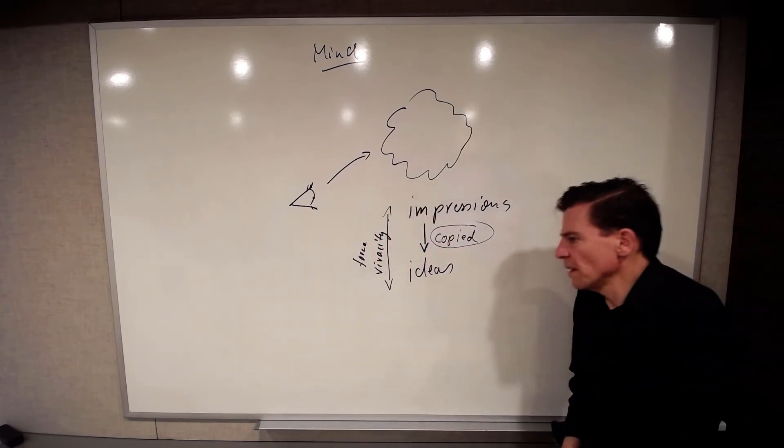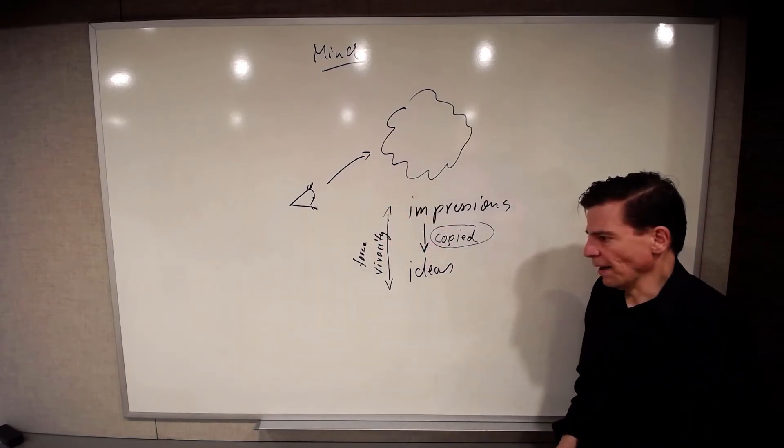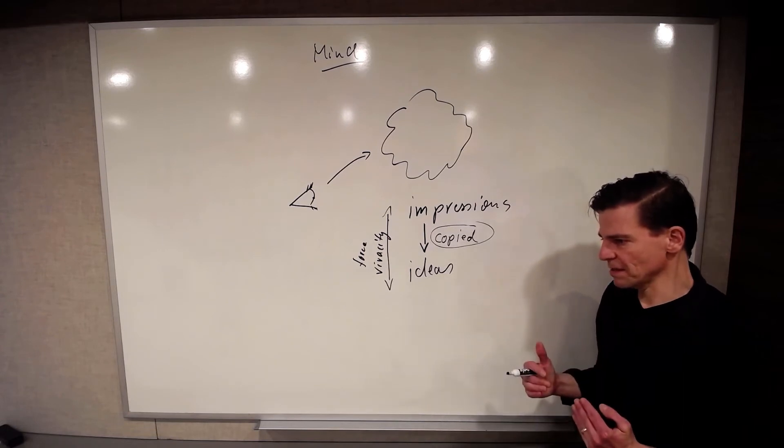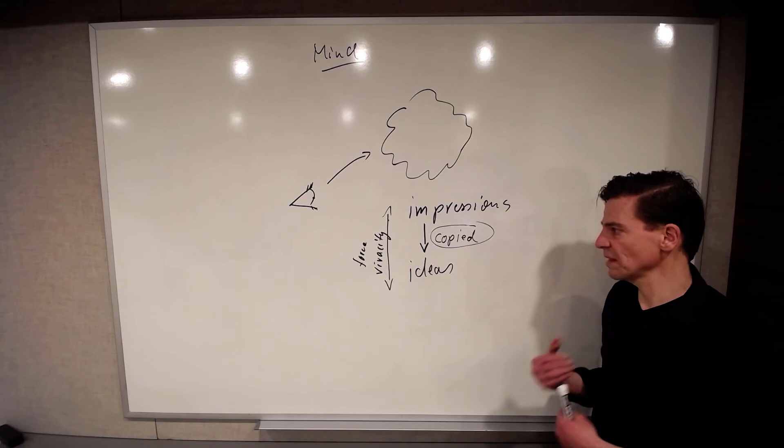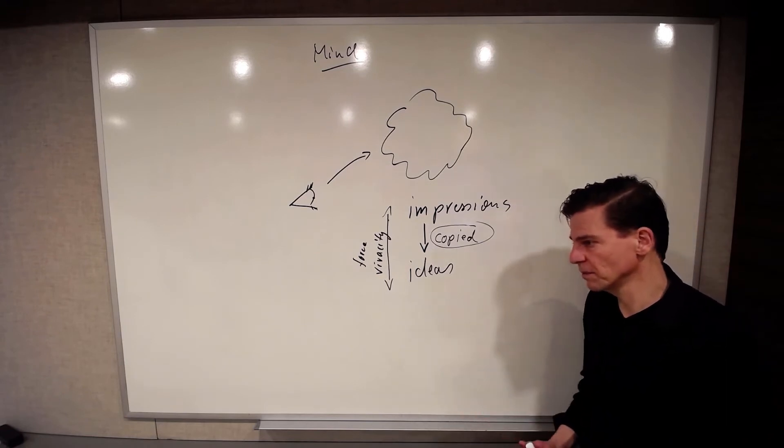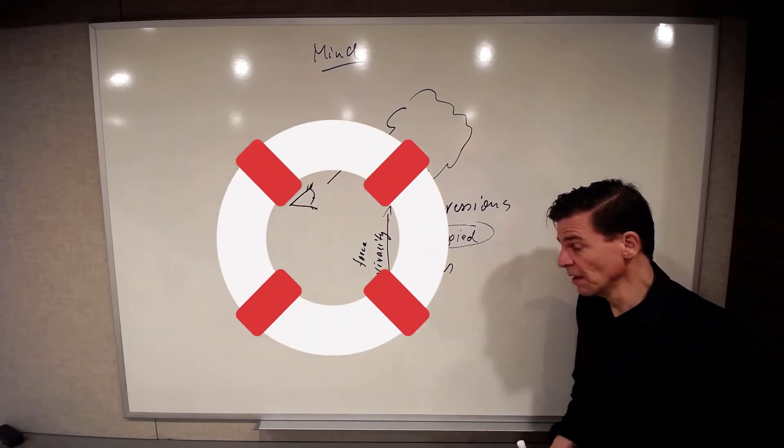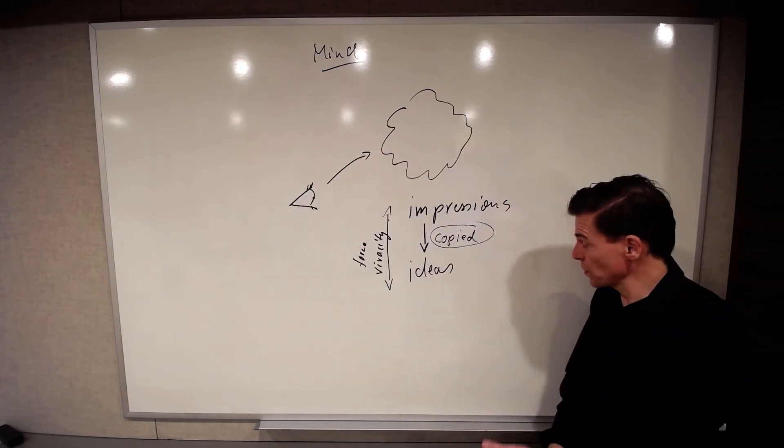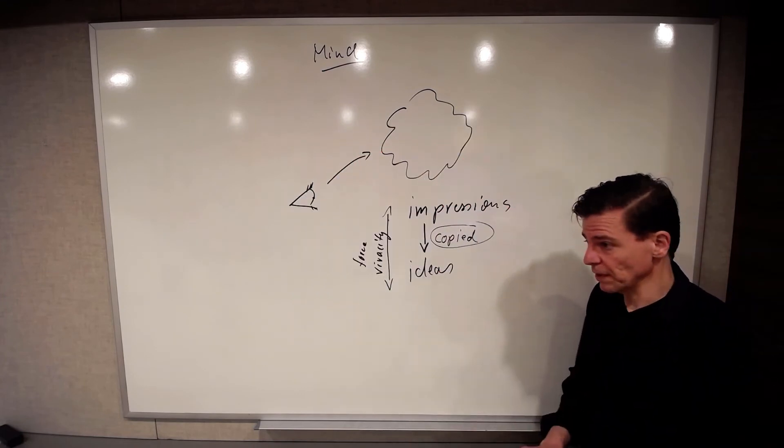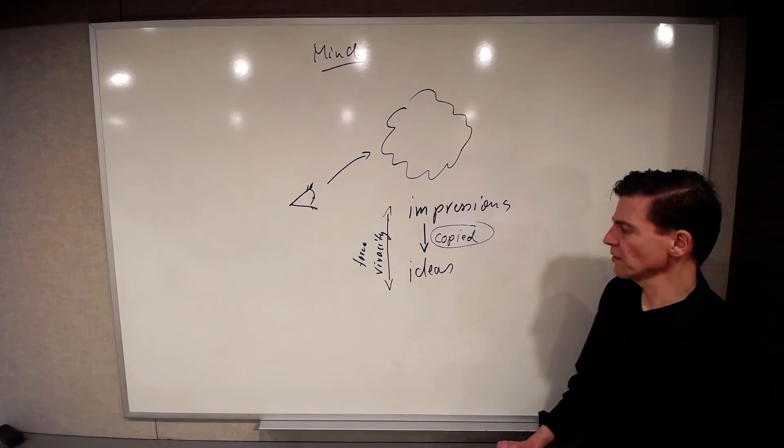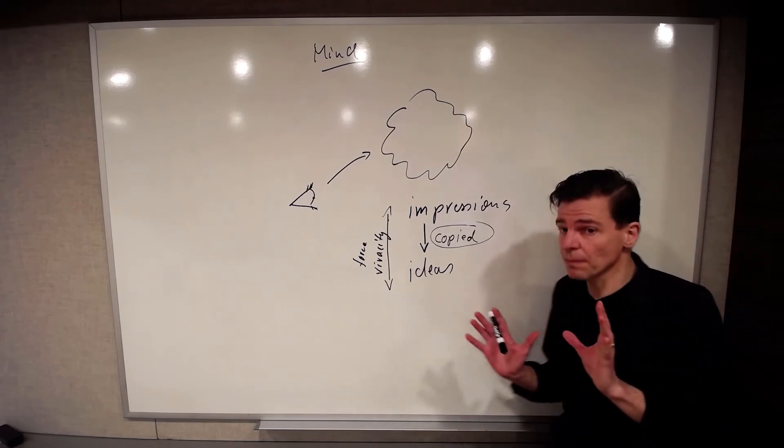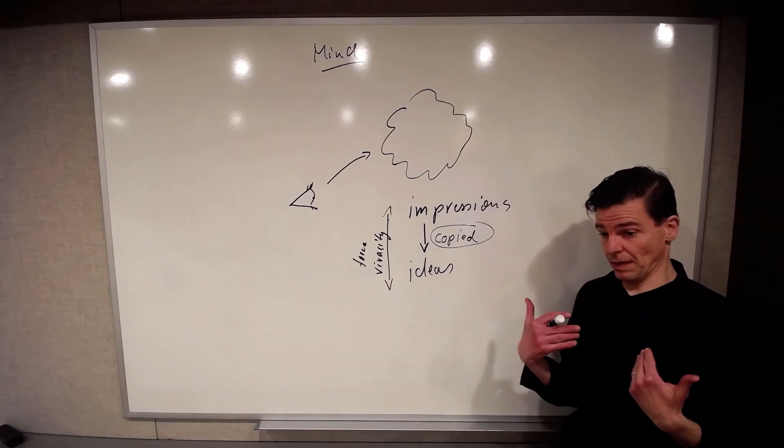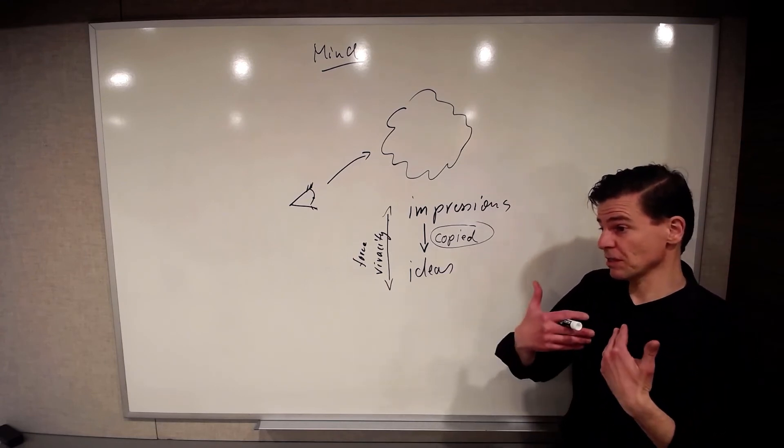Hume wants to be a scientist of the mind. And he wants to minimize the assumptions he makes and the assumptions he brings into this. So unlike Descartes, who gladly helped himself to a causal principle and to a notion of substance and to a notion of free will and thereby to a notion of God and all the rest of it, Hume says, well, if I want to be scientific about it, meaning as an introspectionist exercise...